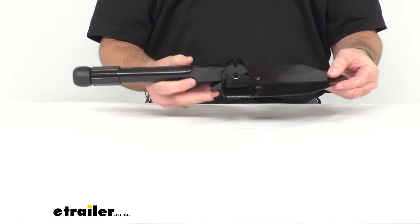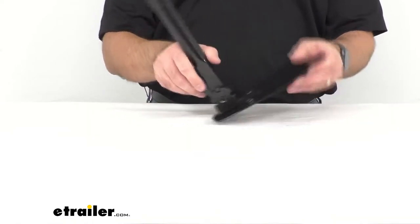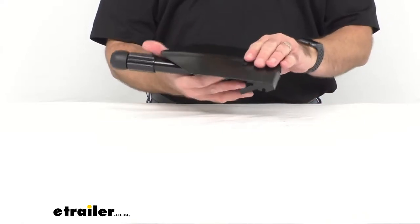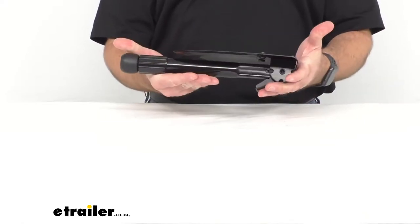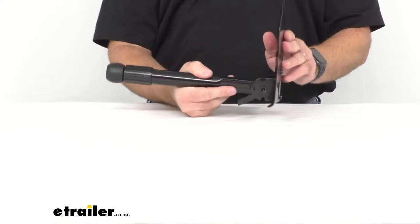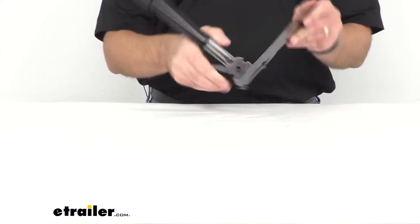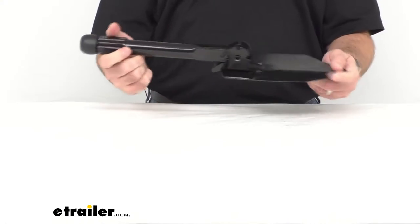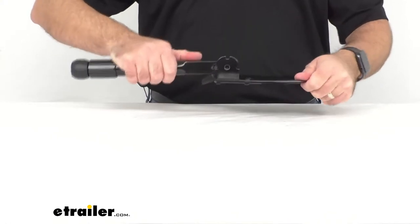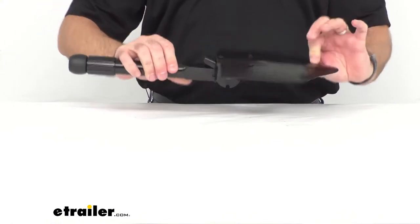This shovel does fold into the handle as you can see here for compact storage. And it does lock into not only the closed position but also at a 90 degree angle. And then also when it is fully extended it's going to lock in there nice and secure for your digging needs.